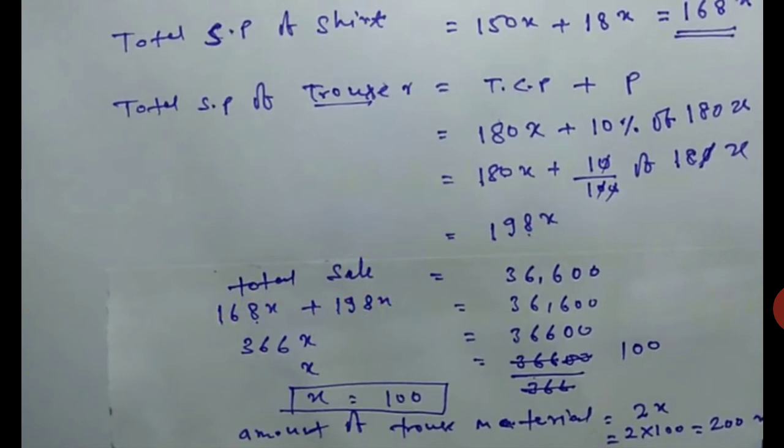Total sale is 36,600. Total sale equals 168x plus 198x equals 36,600. Adding these gives us 366x equals 36,600. We divide to find x equals 100.